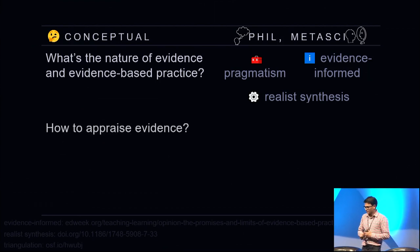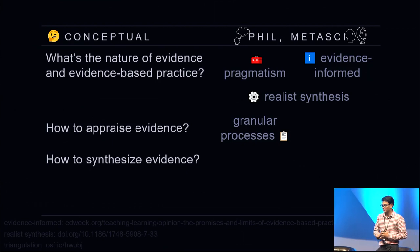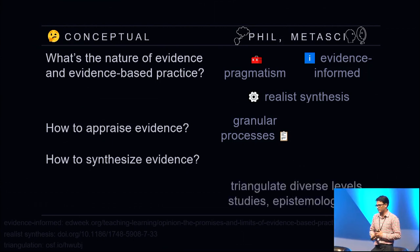So to answer the question, how do we appraise the research and how do we synthesize the research, we favor granular checklists, granular processes, much more granular systems of reviewing than we have now, and the triangulation, not just of empirical effects, but diverse levels of explanations: theories, studies, epistemologies, taking a very broad approach to even viewing research, synthesizing research.